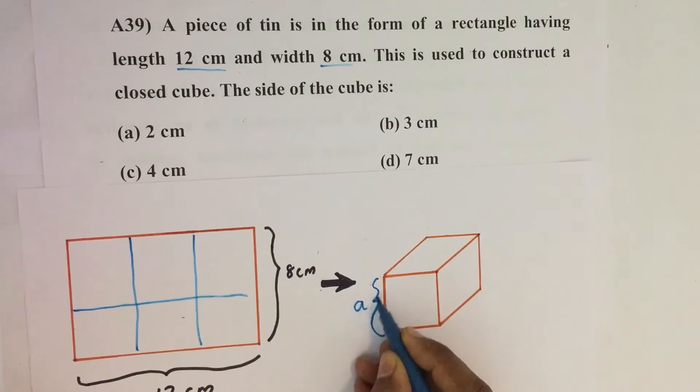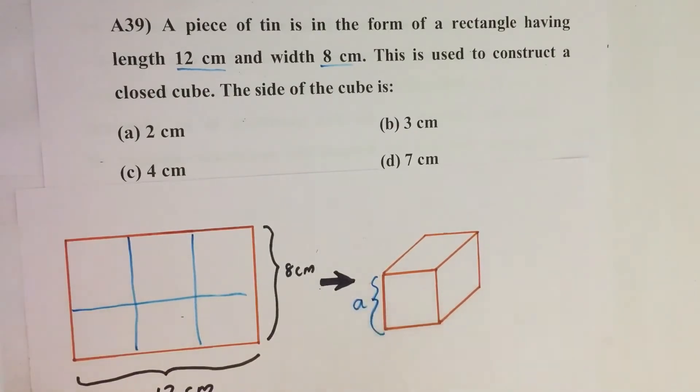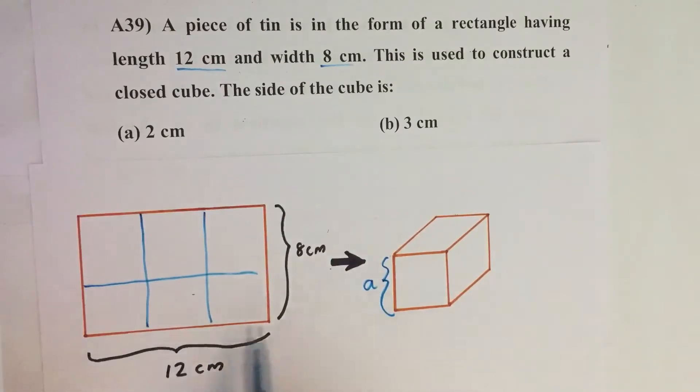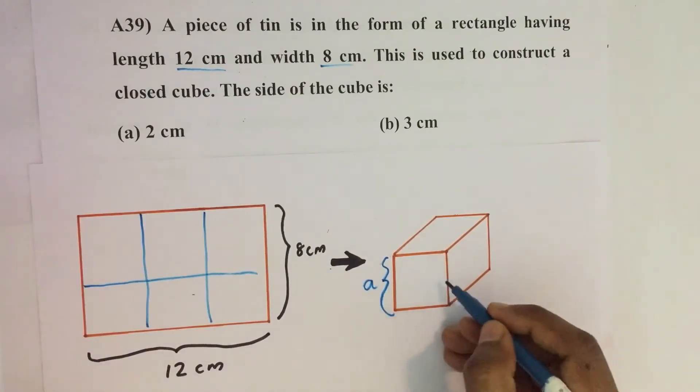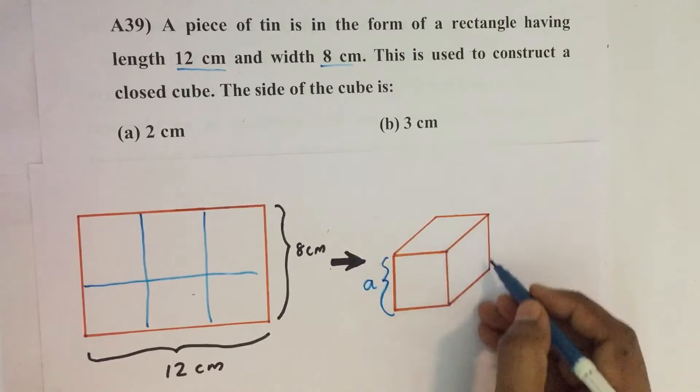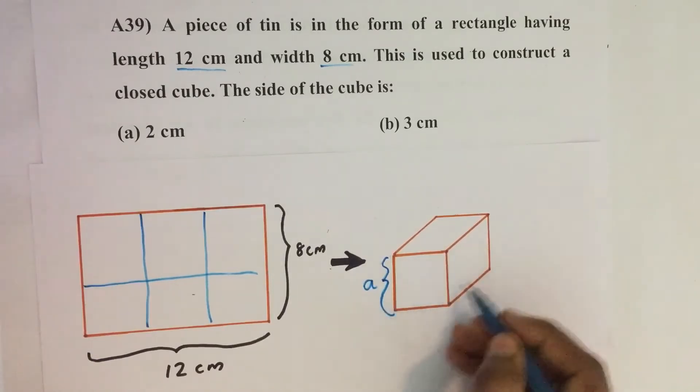So here I am considering this side as A. So what is the value of this A? That is what we have to find. The area of this sheet will be the same as the outer surface area of this cube.